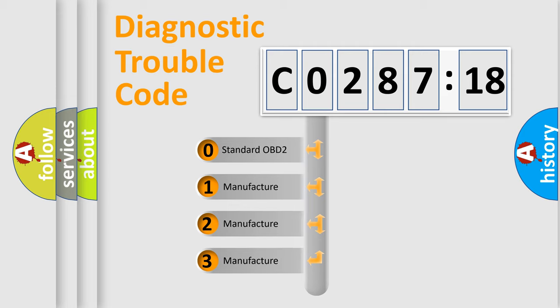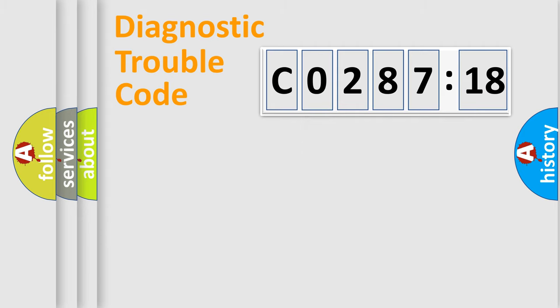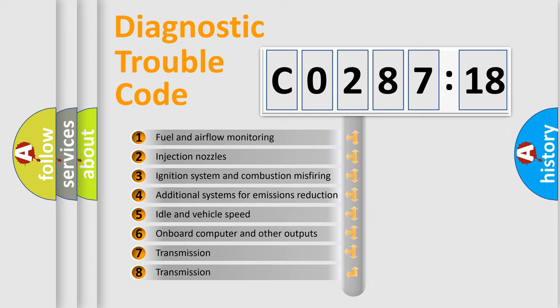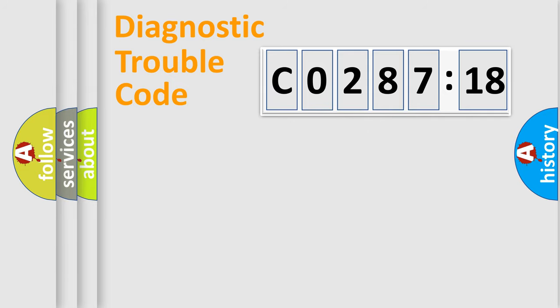If the second character is expressed as zero, it is a standardized error. In the case of numbers 1, 2, or 3, it is a manufacturer-specific error. The third character specifies a subset of errors. The distribution shown is valid only for standardized DTC codes. Only the last two characters define the specific fault of the group.